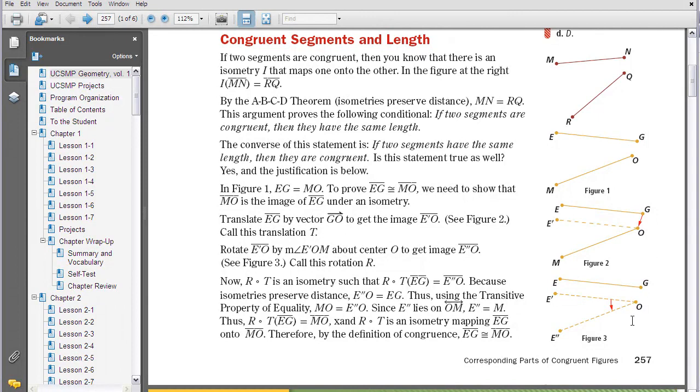Then if you go down to figure 3, we can show that E prime O would then rotate onto E double prime O and match up. So that would mean that EG would be congruent to MO by the definition of congruence. So we can say both ways. If two figures are congruent, they have the same length. Or if they have the same length, they are congruent.